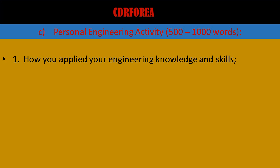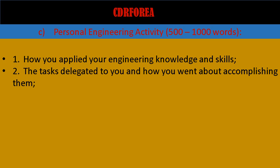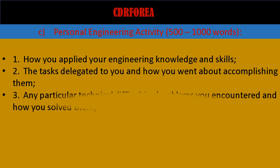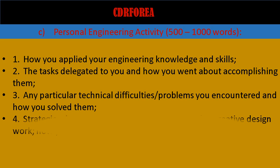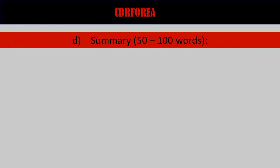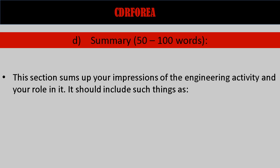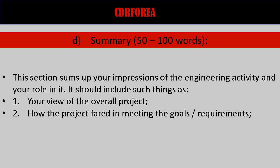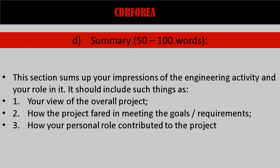This section should include such things as: 1. How you applied your engineering knowledge and skills, 2. The tasks delegated to you and how you went about accomplishing them, 3. Any particular technical difficulties or problems you encountered and how you solved them, 4. Strategies devised by you including any original or creative design work and how you worked with other team members. Summary (50 to 100 words): this section sums up your impressions of the engineering activity and your role in it, including your view of the overall project, how the project fared in meeting its goals, and how your personal role contributed to the project.